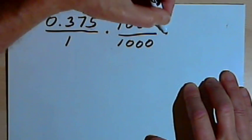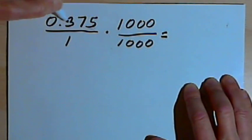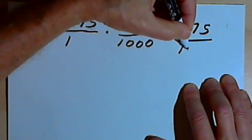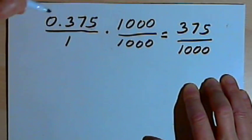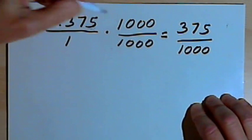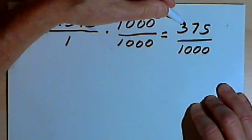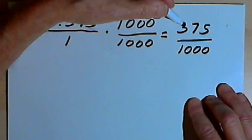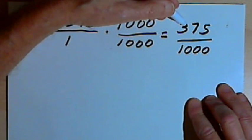So I'm going to turn my numerator into a whole number, 375. My denominator is going to be 1,000. Now I've got a fraction with no decimals in it, but I probably should reduce that to its lowest terms.